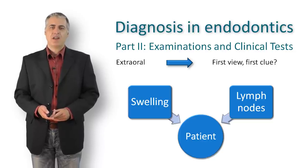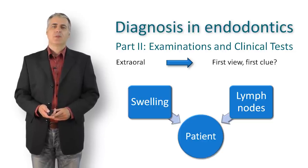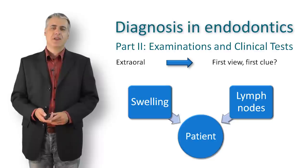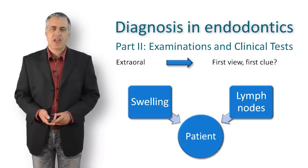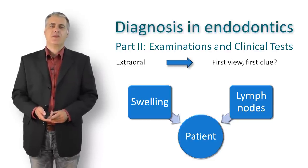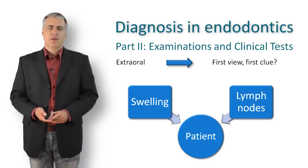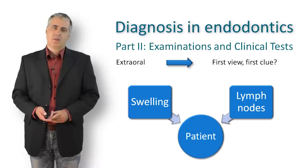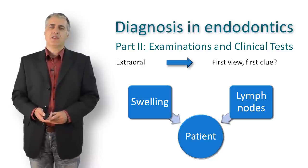Firm and tender lymph nodes in combination with elevated temperature are a sign of an advanced infection, which might or might not be triggered by a diseased tooth.